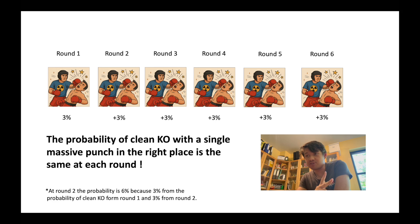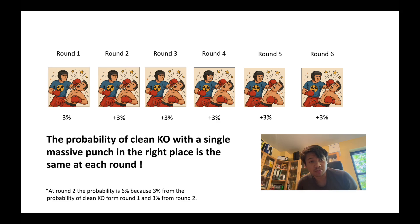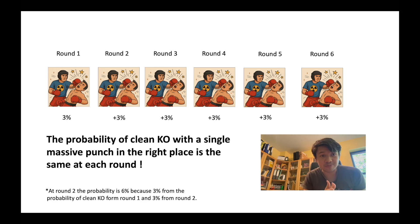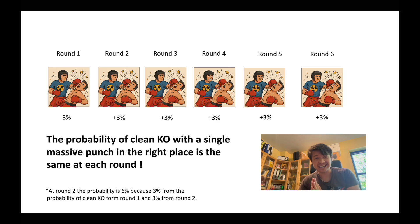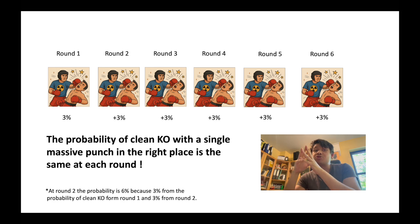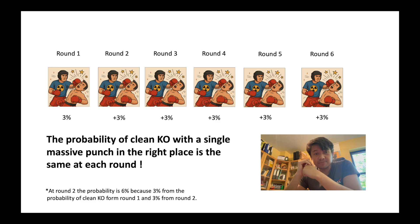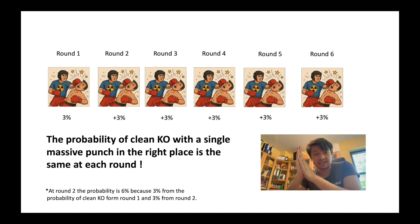Let's say in this example, 3%. This kind of knockout doesn't depend on fatigue or on previous damage — it's all about timing and precision. This can happen at the very first punch to the very last punch. So the probability of alpha killing is always the same, from round 1 to round 18. A clean knockout is always possible with the same probability.